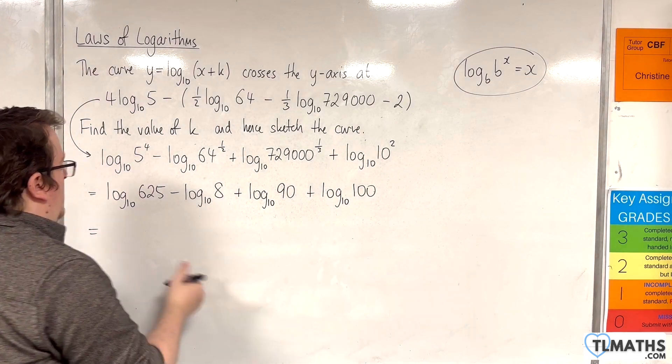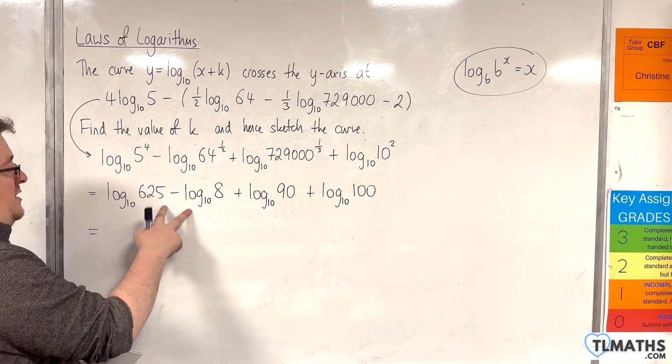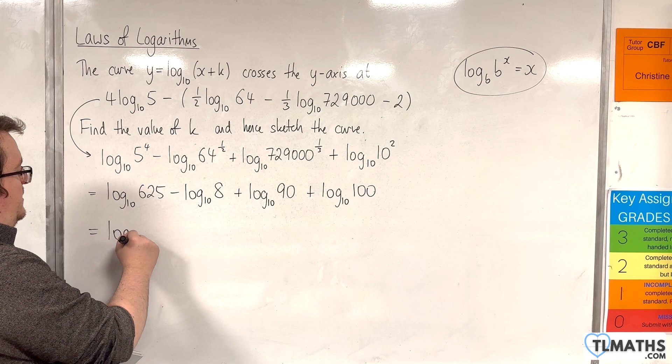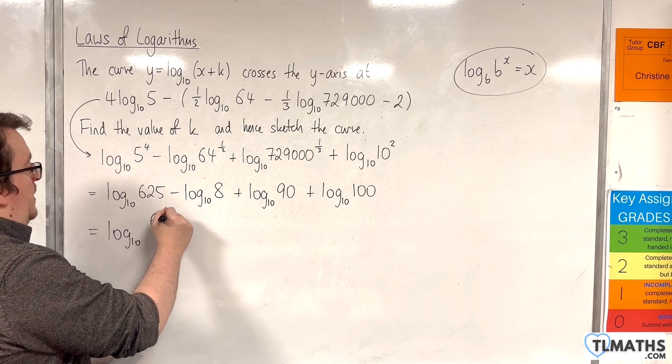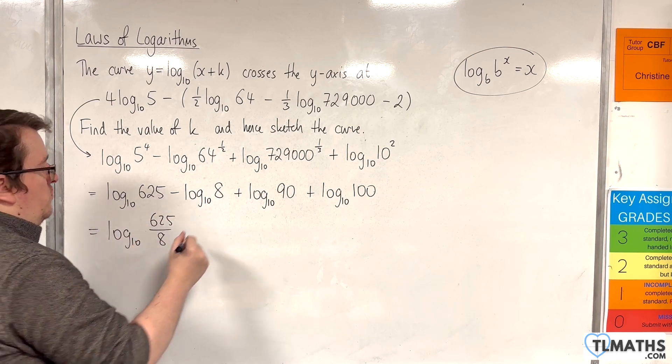So working from left to right, so focus on these two first. We're going to have log base 10 of 625 over 8 using the quotient rule.